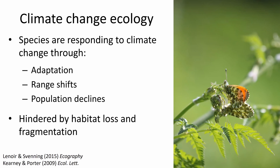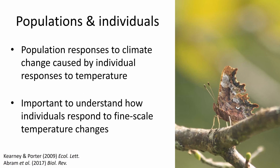If species are unable to do either of these things then they're likely to suffer population declines, and these declines are hindered by the habitat loss and fragmentation I've already talked about, because it makes it that much harder for species to move through a landscape if the patches of suitable habitat are further and further apart. But these population-level responses to climate change are only telling us so much — this big picture response is going to be caused by how individual animals actually respond to day-to-day changes in temperature, and so it's important for us to understand how individuals respond to fine-scale temperature changes.